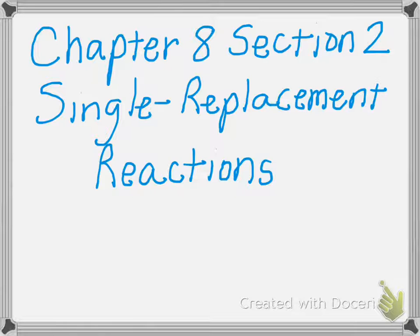That was section one. In section two, we've talked about two of the five types of chemical reactions already. The first type was a combination or synthesis reaction, where we have two reactants that become one product. Typically you're not asked to predict the products of that unless it's a metal and a non-metal reacting to produce an ionic compound.